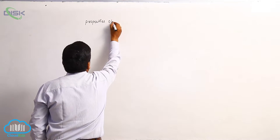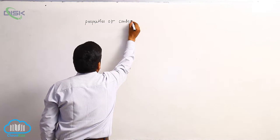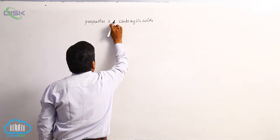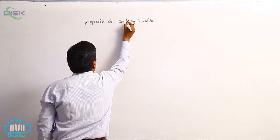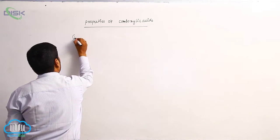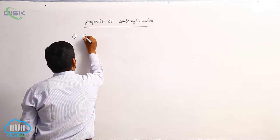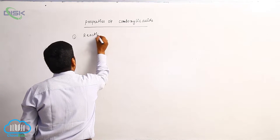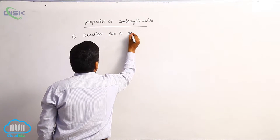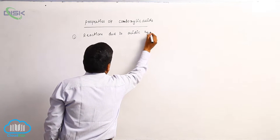Properties of Carboxylic Acids. Number 1 is reactions due to acidic hydrogen.